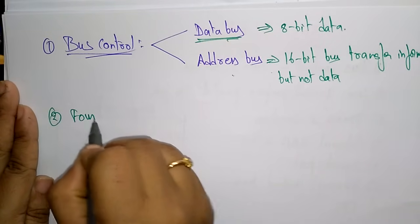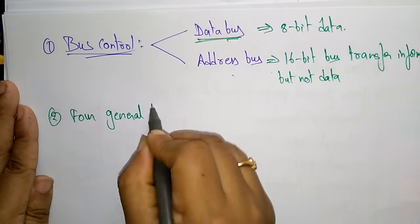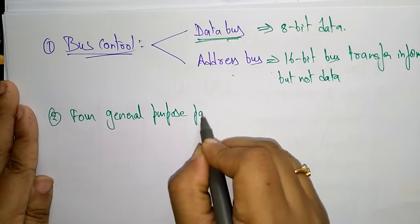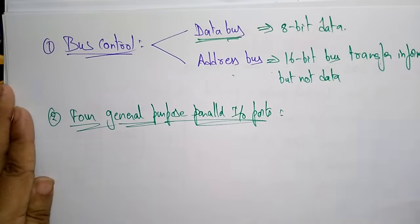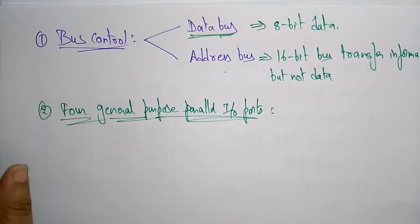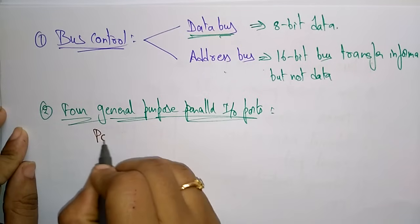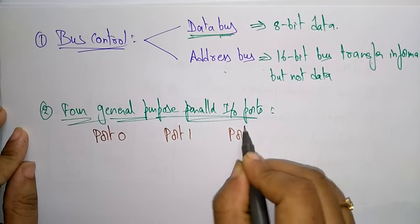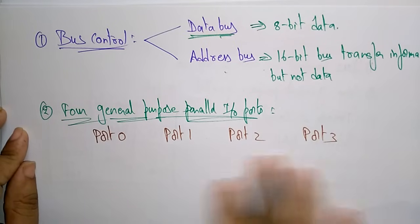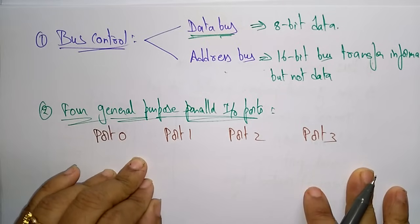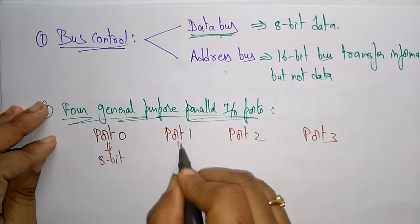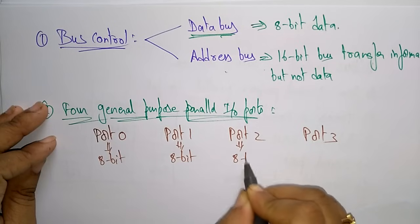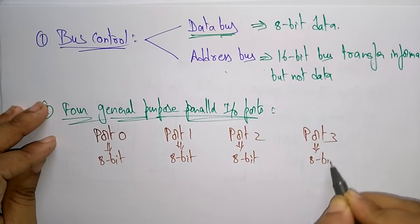The second component is the four general purpose parallel I/O ports. The 8051 microcontroller has four such ports: Port 0, Port 1, Port 2, and Port 3. Each port is an 8-bit port.